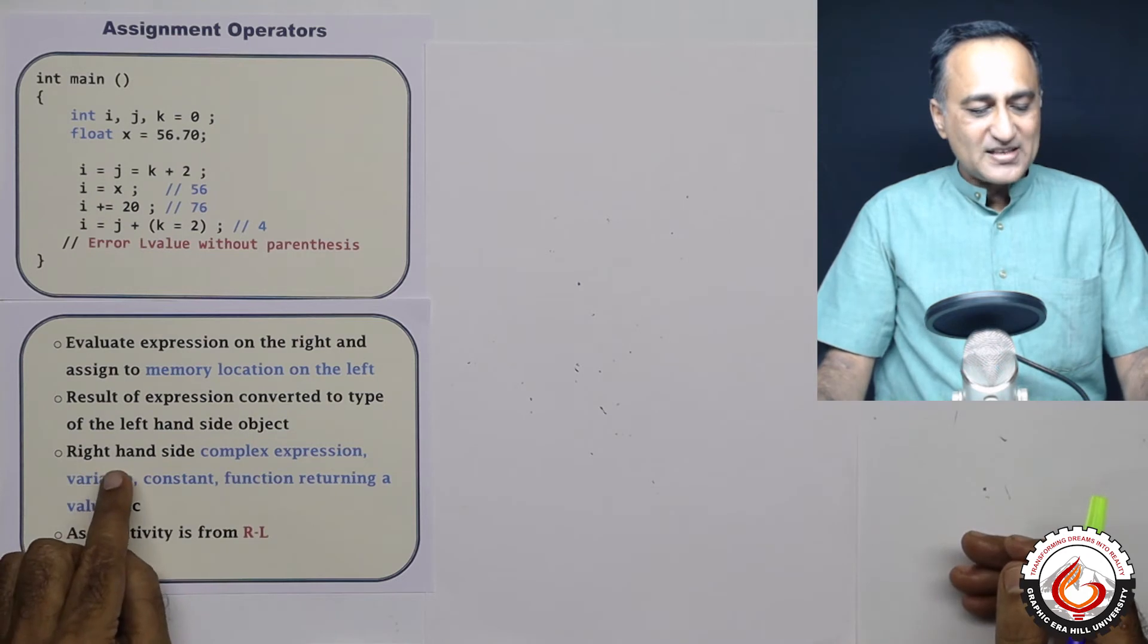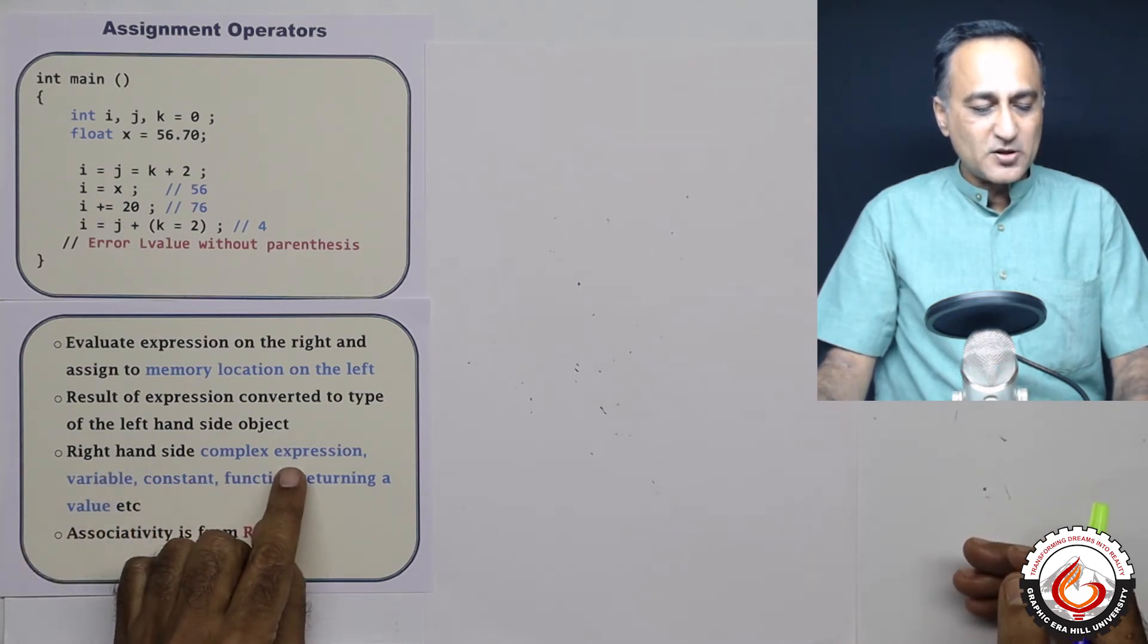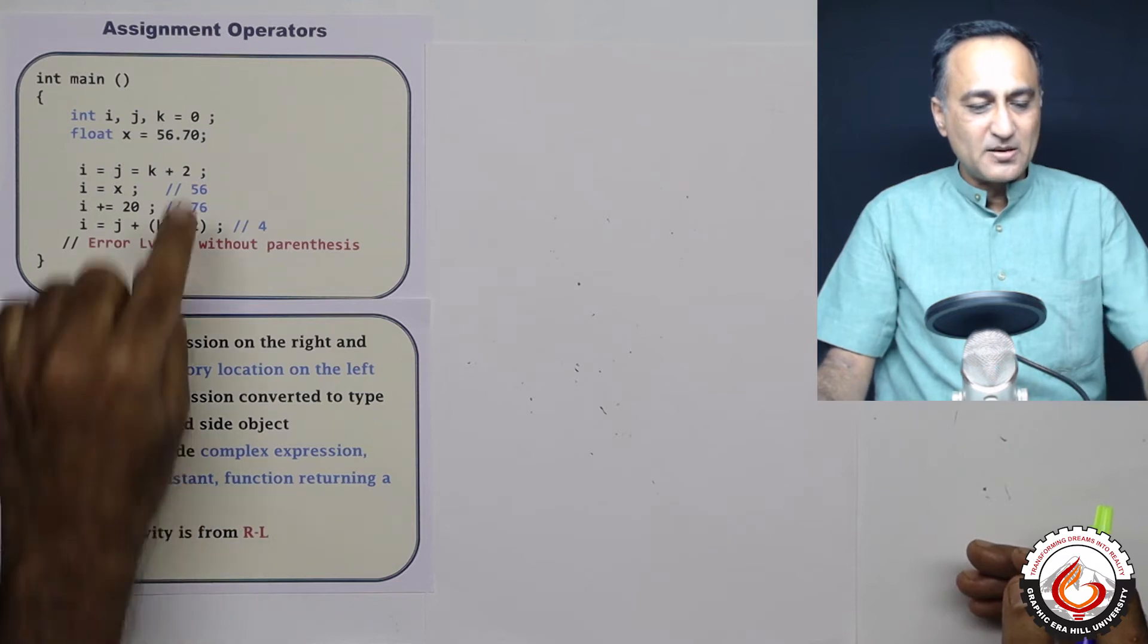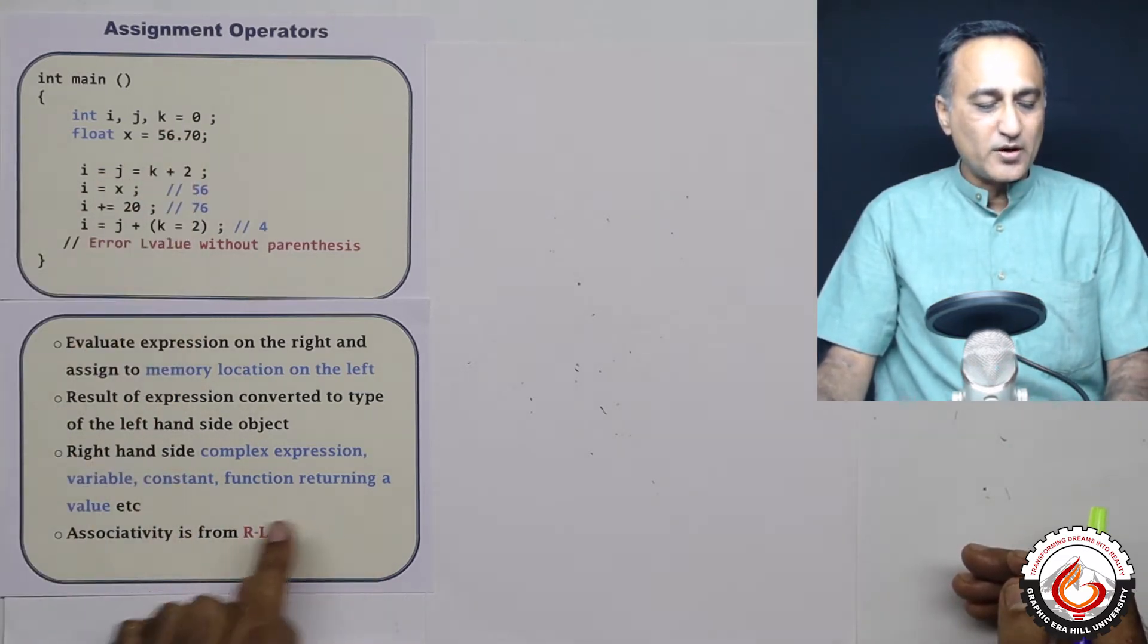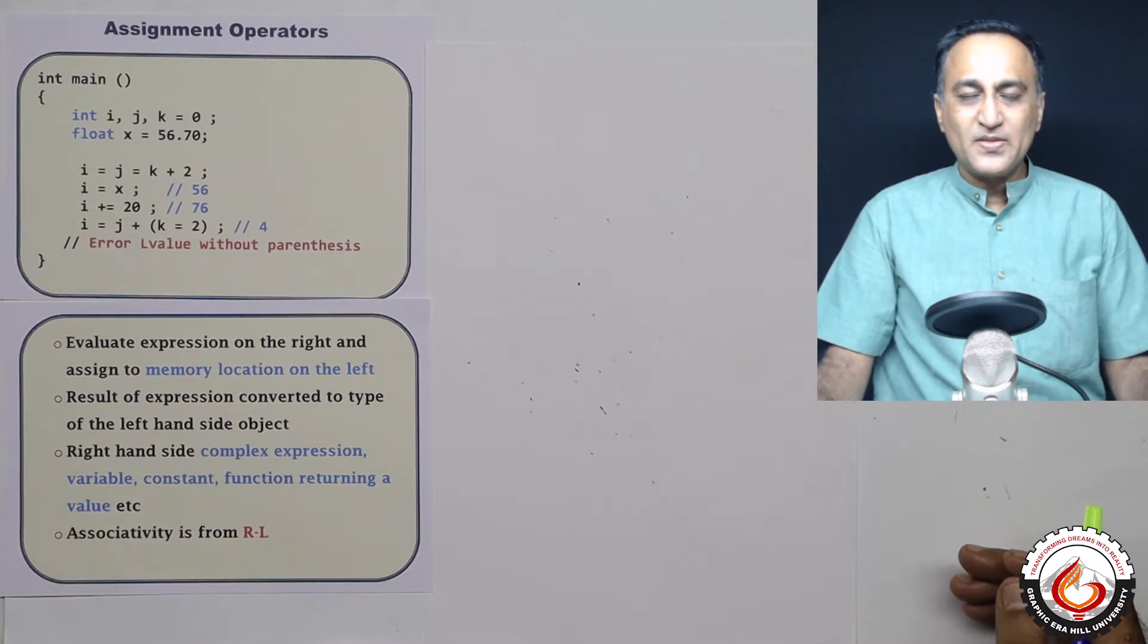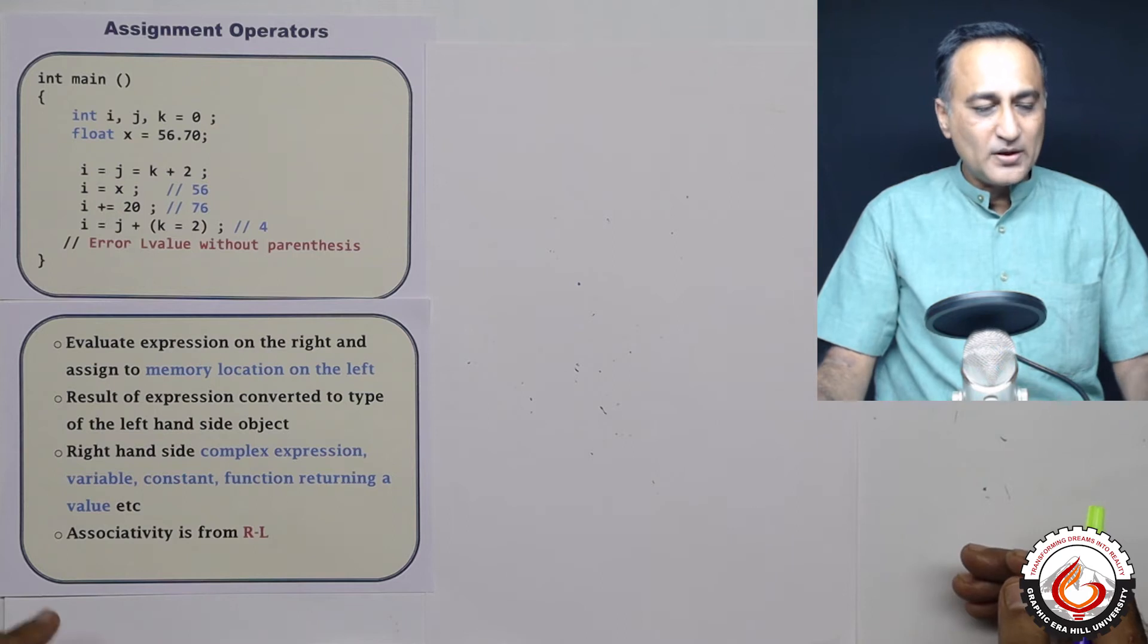Now right hand side of an assignment statement can be a complex expression, it can be a simple variable, it can be a constant like zero, it can be a function like square root returning a value and so on. The associativity of assignment is always going to be from right to left.